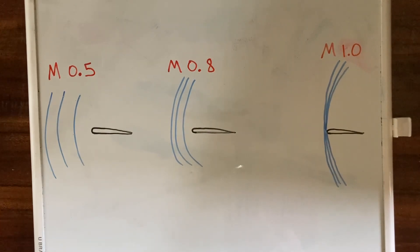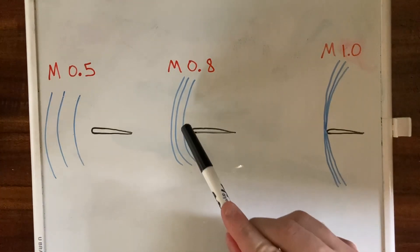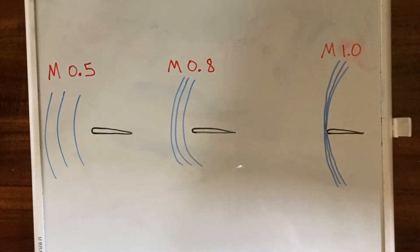But that means that the air flowing over the top of the wing moves at a faster speed than the aircraft itself through the air. So as you get closer and closer to the speed of sound, the airflow over the top of the wing can actually reach the speed of sound before the aircraft itself does.